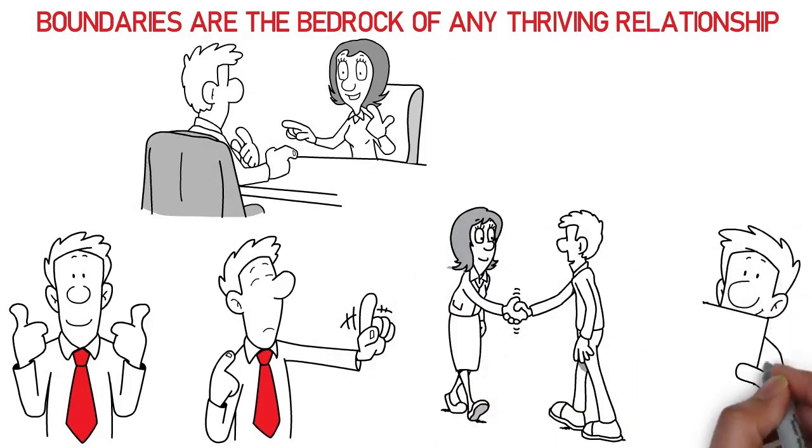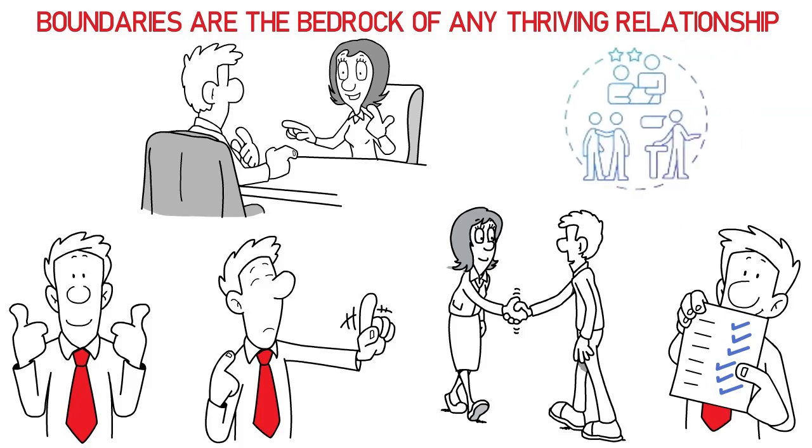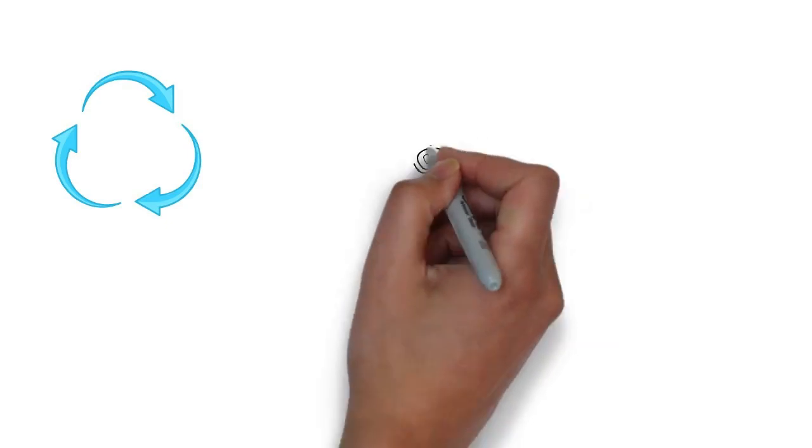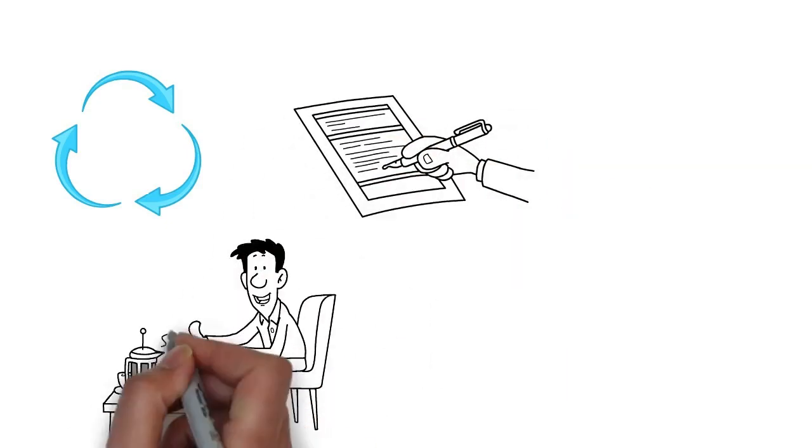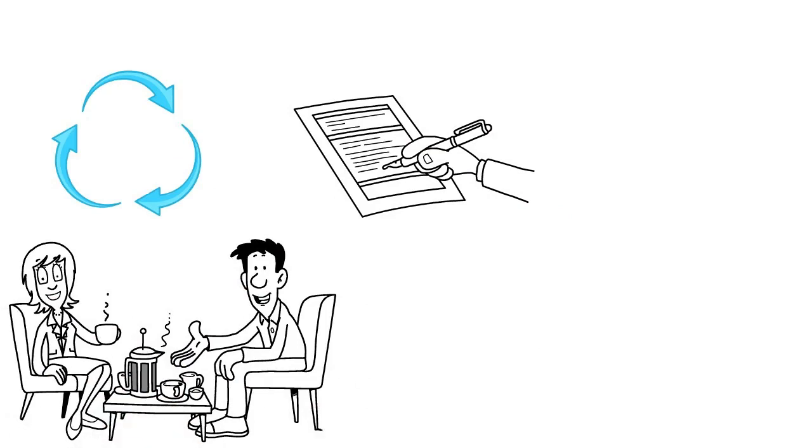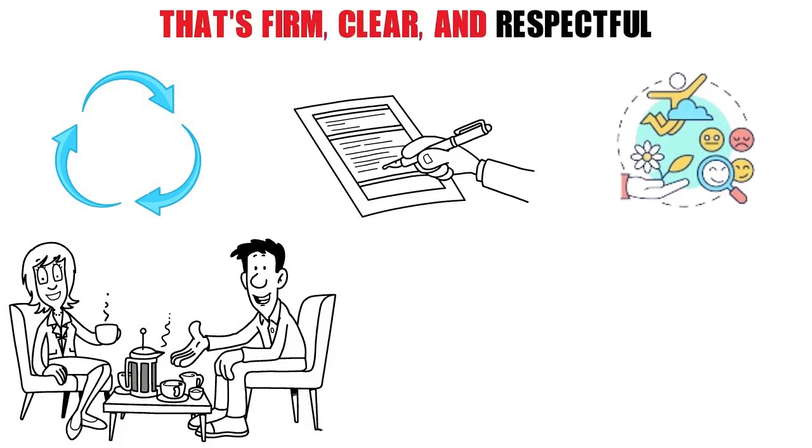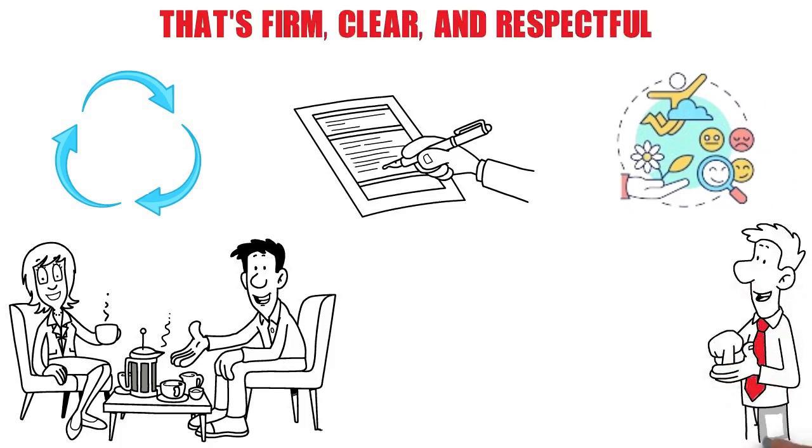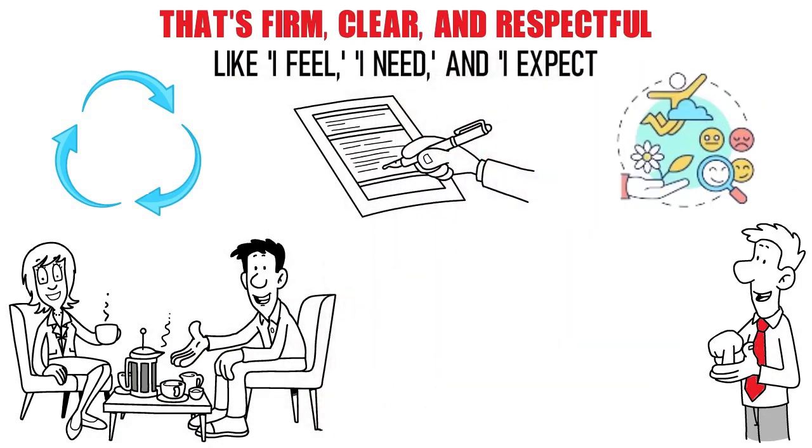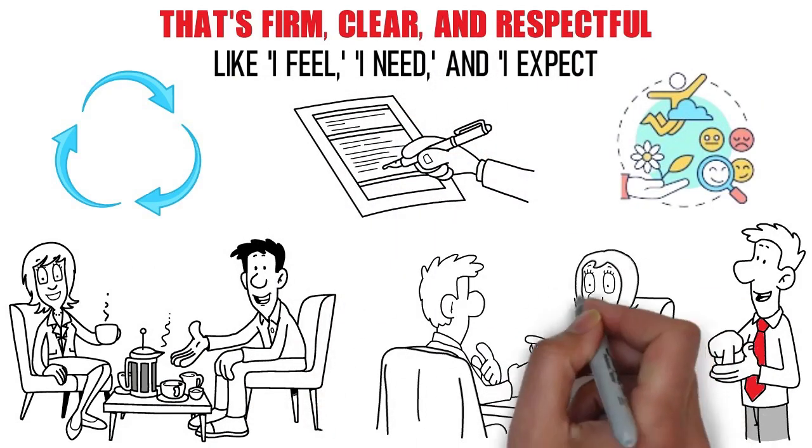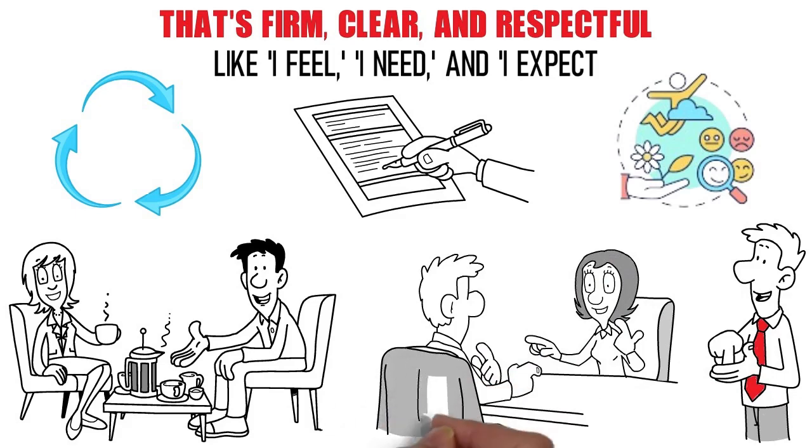But establishing these boundaries is only the first step. Maintaining them requires a strong sense of assertiveness. Consistency is key. Once these limits are set, it's crucial to stick to them, upholding a message of self-respect and the expectation of mutual respect. It's about expressing your needs and feelings in a way that's firm, clear, and respectful. Practice using phrases like I feel, I need, and I expect, helping you to communicate effectively and reinforcing the boundaries you set.